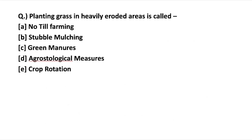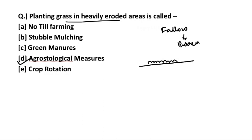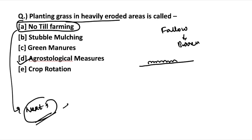Moving to the next question: planting grass in heavily eroded areas is called an agrostological measure. As with strip cropping, growing grass in a particular area prevents soil erosion by both water and wind. During the time when land is fallow or barren, grass can be grown so the soil does not get eroded, and when harvested the grass can be used as fodder for cattle. No-till farming will be discussed in the next ARD video. Stubble mulching involves keeping crop residue of the previous crop so that the soil does not get eroded.